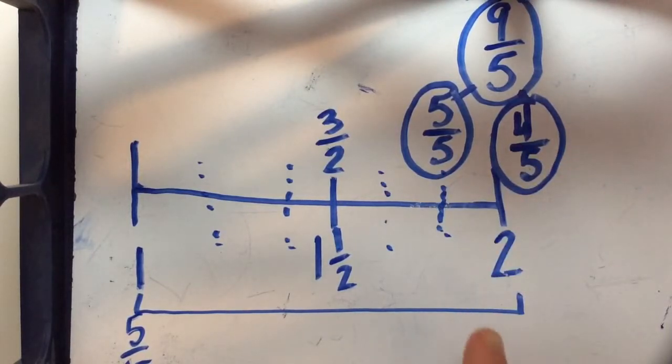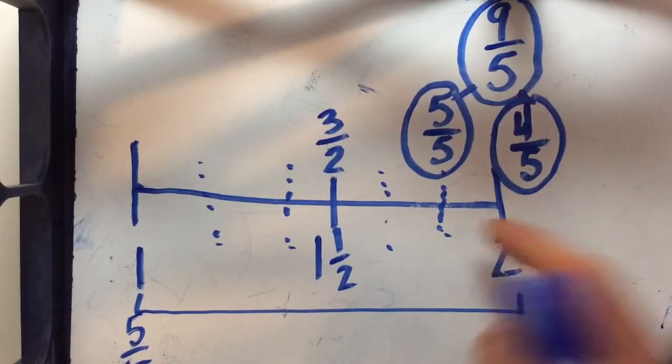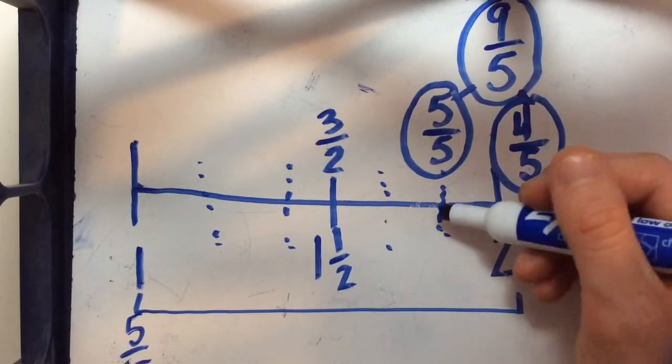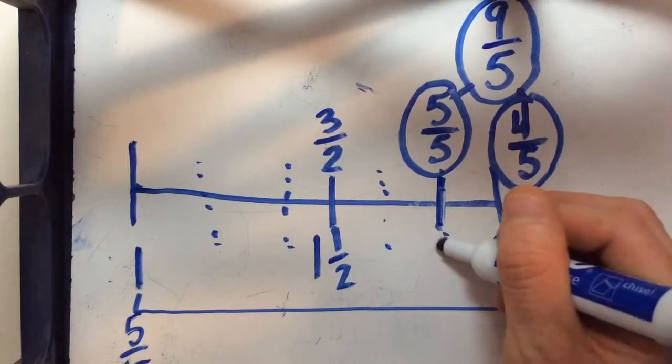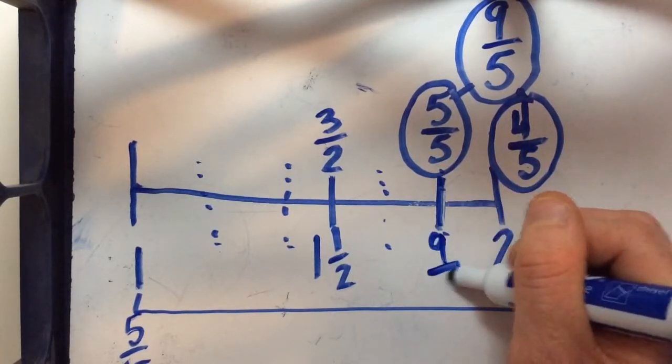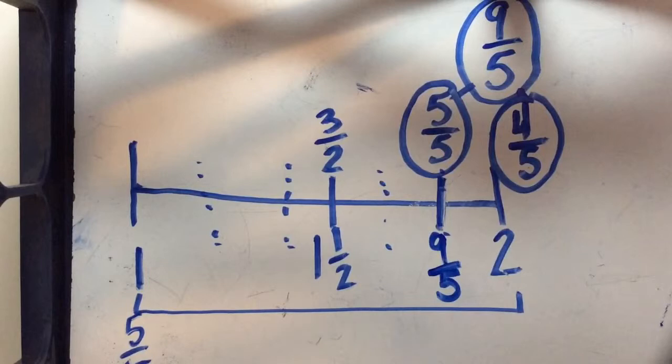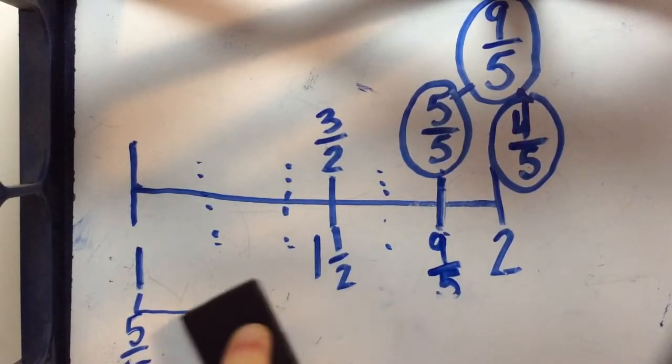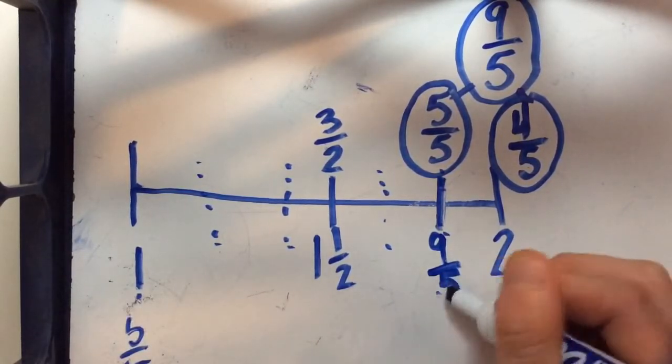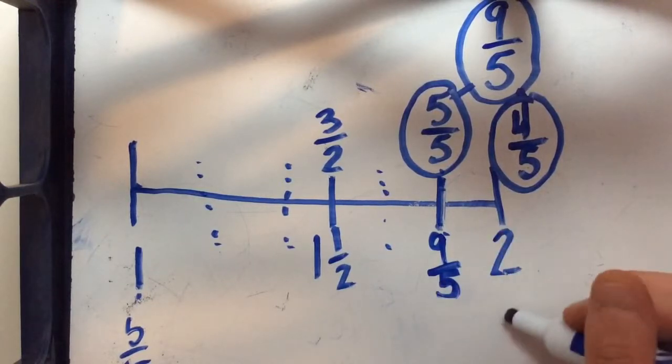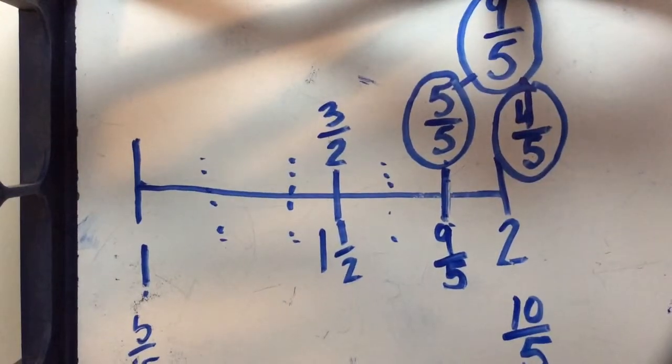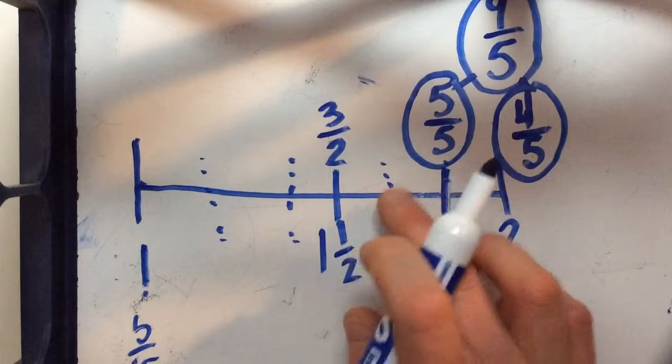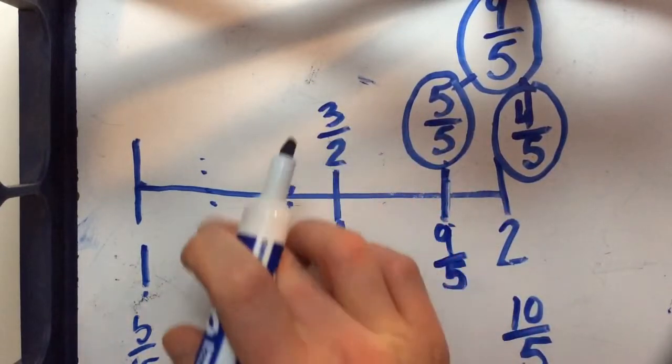That's pretty evenly spaced out so I would feel pretty confident about putting my 4 fifths mark here but let's remember that it's actually representing 9 fifths. We can also think that 9 fifths should be close to 2 because 10 fifths is the same as 2. So we can use all of our benchmarks to help us place improper fractions on a number line.